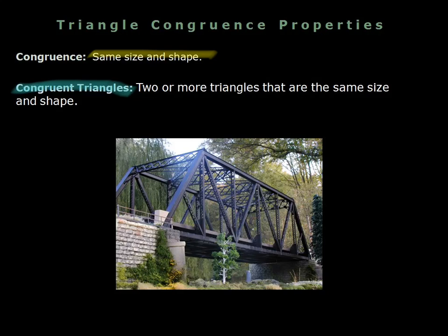Here's a picture of a bridge, and you can see there's a bunch of triangles on it. If you were building a bridge, it would be very important that you get this triangle and the one over here to be the exact same size and shape — otherwise the people driving across, or the train, might fall into the river below if your bridge isn't built right.